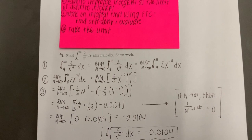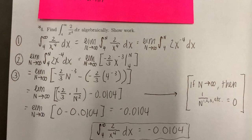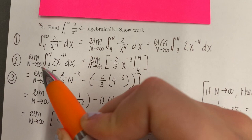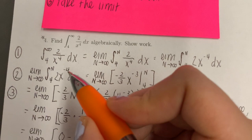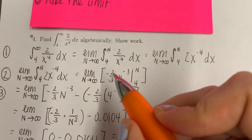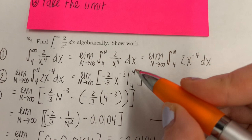Step 2, we work on the integral first using the fundamental theorem of calculus — finding the antiderivative and evaluating. We find the antiderivative by adding 1 to the power: negative 4 becomes negative 3, and we multiply by 1 over negative 3, which gives negative 2 thirds times x to the negative 3rd. We evaluate that from 4 to n.